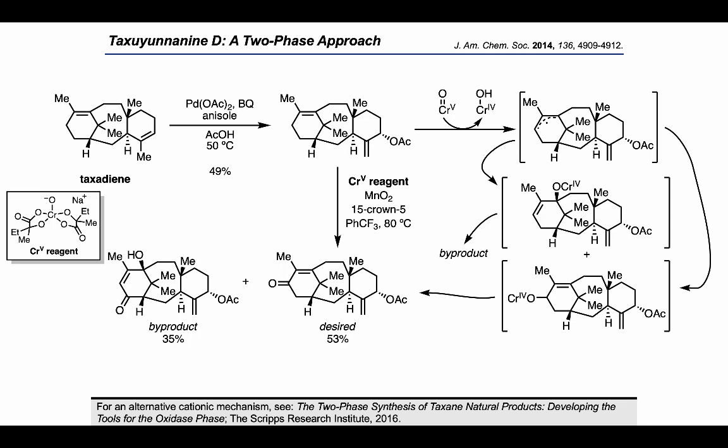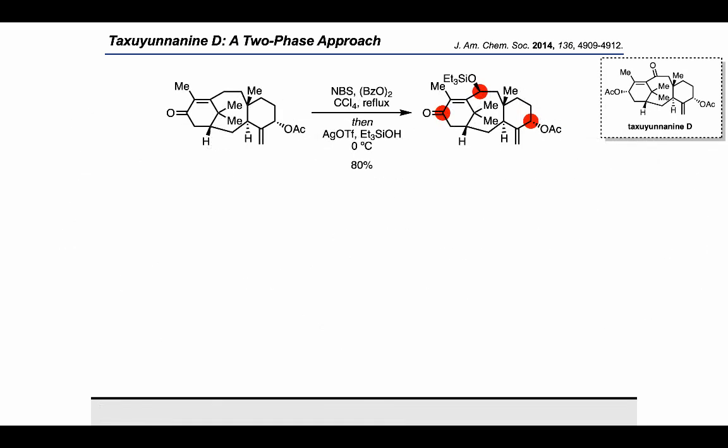To install the final oxygen required for completion of taxaunanine D, the authors treated with N-bromosuccinimide and benzoyl peroxide to effect an allylic bromination, followed by a silver-mediated substitution reaction using a silanol nucleophile.